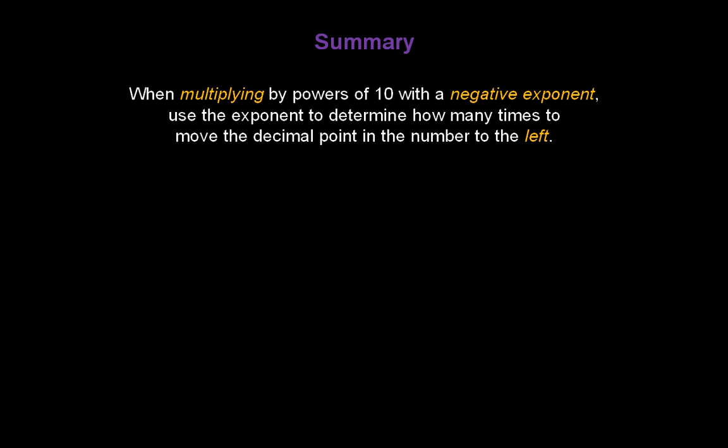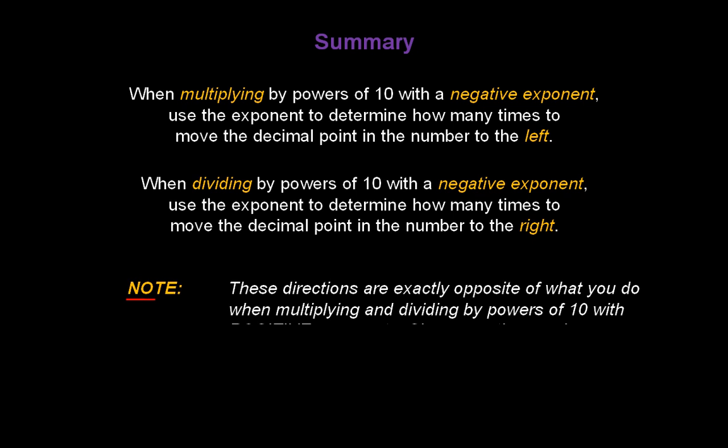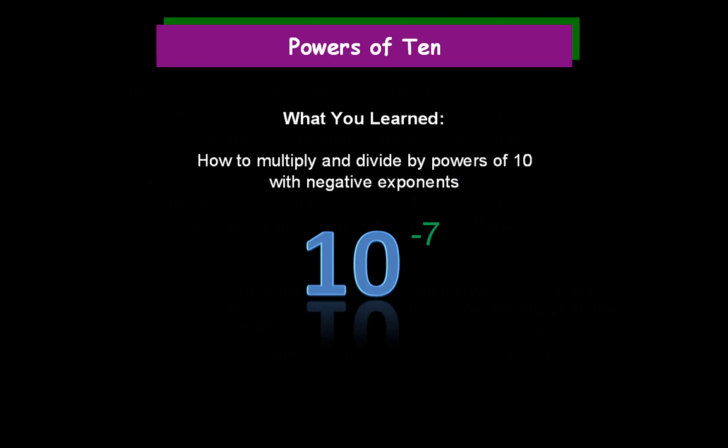In summary: when multiplying by powers of 10 with a negative exponent, use the exponent to determine how many times to move your decimal point to the left. When dividing by powers of 10 with a negative exponent, use the exponent to determine how many times to move the decimal point to the right. Note that these directions are exactly opposite of what you do with positive exponents — which makes sense, since negative numbers are the opposites of positive numbers. Congratulations! You've learned how to multiply and divide by powers of 10 with negative exponents.